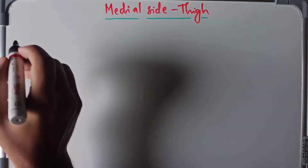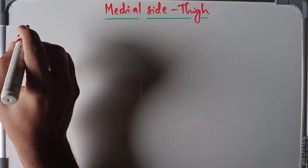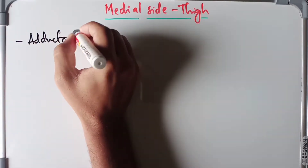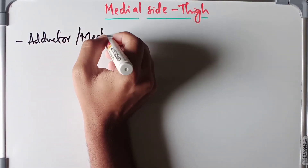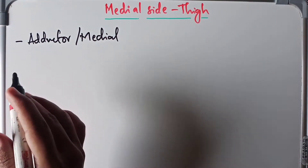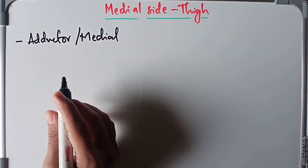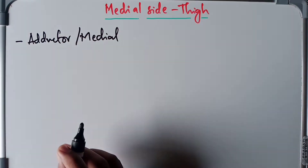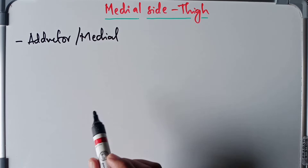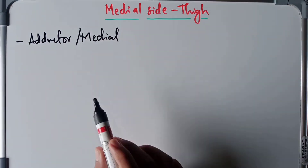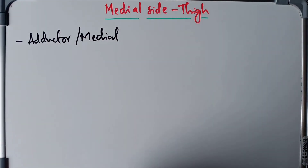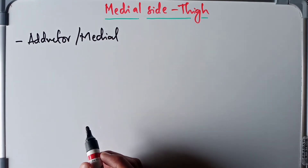This is also known as the adductor compartment or the medial compartment of the thigh. It is well-developed and contains well-developed adductor muscles — the adductor longus, adductor brevis, and adductor magnus — which are responsible for adduction, meaning they pull the thigh towards the median plane.